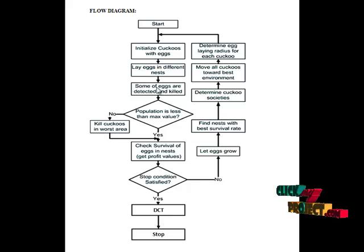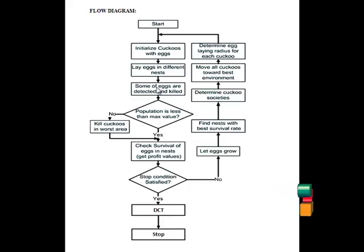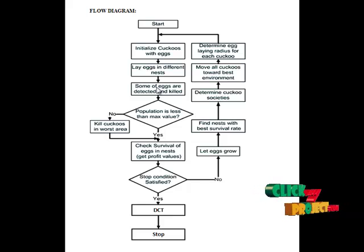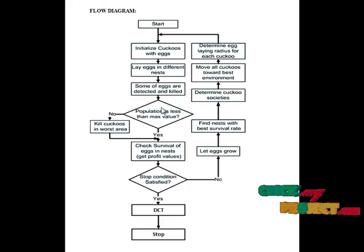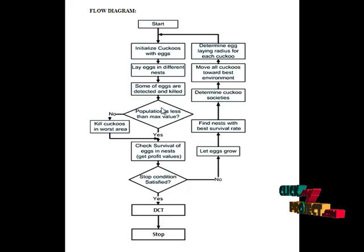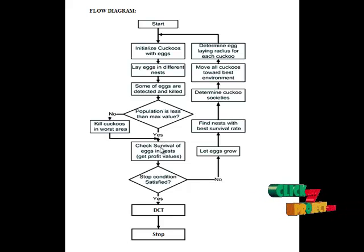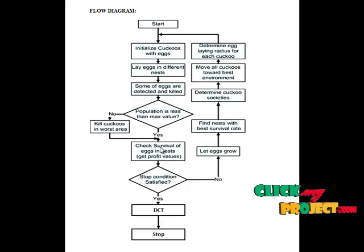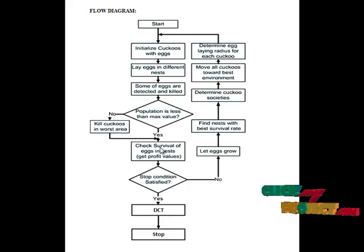Then, some of the eggs are detected and killed because the host bird in the nest detects that the egg is not its own. Then we check whether the population of eggs is less than or equal to the maximum. If the population is less than the maximum value, we check whether the eggs are at the required levels. If the population of the egg is more than the maximum value, the cuckoos are eliminated in the worst case area.